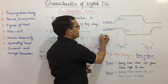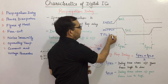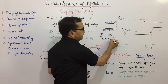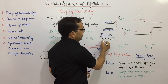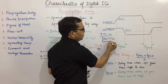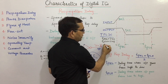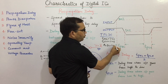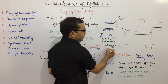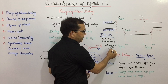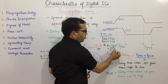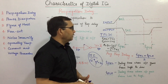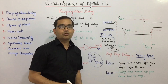For example, if we take a standard TTL IC where TPHL is equal to 7 nanoseconds and TPLH is equal to 11 nanoseconds, then the average propagation delay will be (11 + 7) divided by 2, which equals 18 by 2, equal to 9 nanoseconds. So the average propagation delay is the average of these two delays.